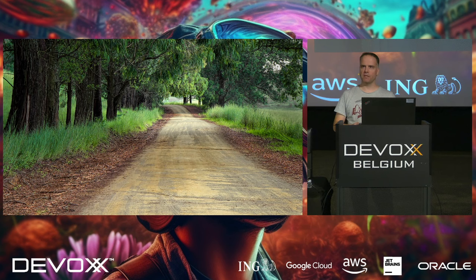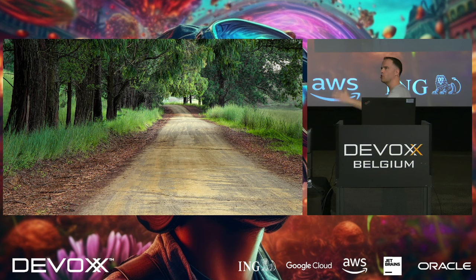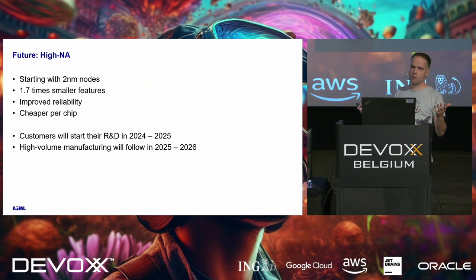Looking towards the future, there's a lot of discussion about what's next beyond Moore's Law. We are working on a new type of machine called high NA. As you see in the timelines, they are approaching quite quickly now. It again allows creating smaller details, smaller chips, smaller transistors, and becoming even faster.